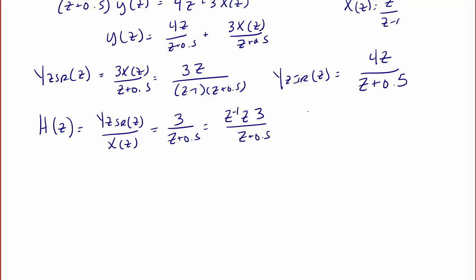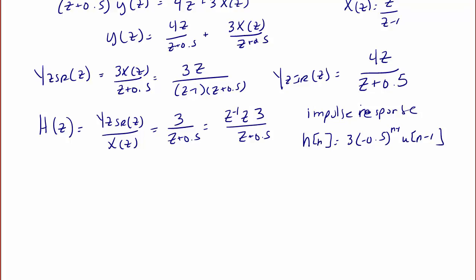The transfer function H(Z) = 3Z/(Z + 0.5) can be used to find the impulse response. The impulse response is the inverse Z transform of H(Z), so h(N) = 3 × (−0.5)^N u(N). YZIR is found by taking the inverse Z transform of YZIR(Z), giving YZIR(N) = 4 × (−0.5)^N u(N).